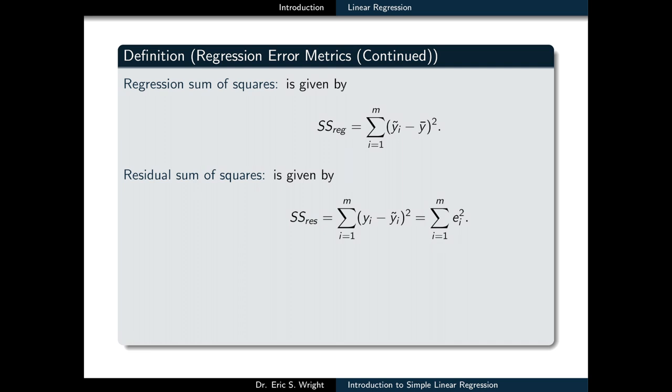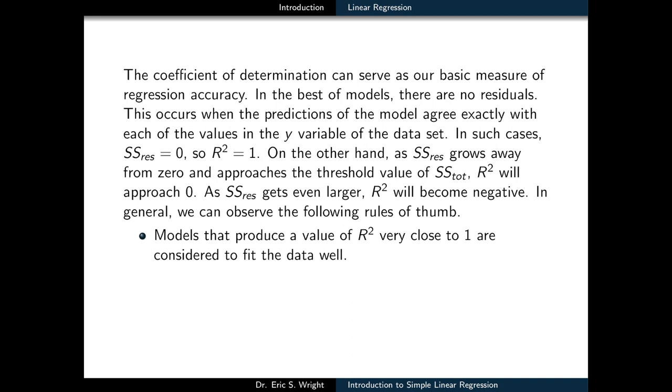In other words, it is the sum of the squares of the deviation between each Y coordinate in the data set and the prediction made by the model at each corresponding X coordinate. The coefficient of determination is typically denoted by R squared. We compute it by forming the ratio of the difference between SS total and SS residual and SS total. The coefficient of determination can serve as our basic measure of regression accuracy.